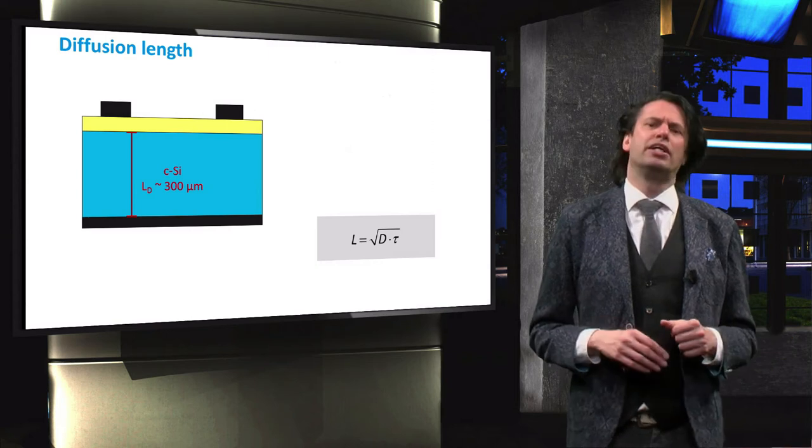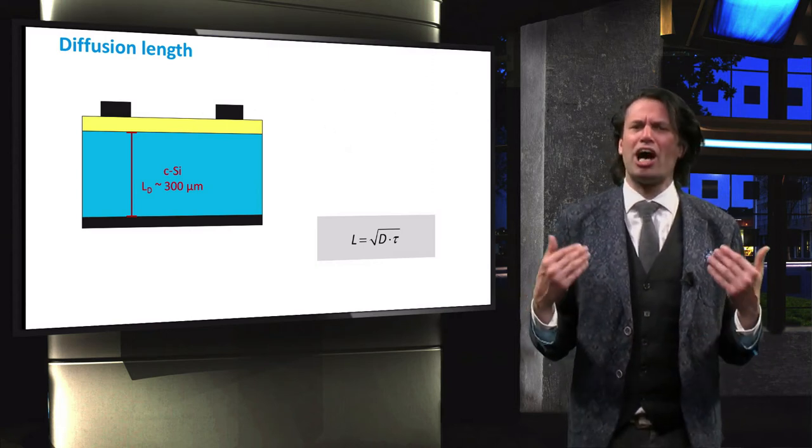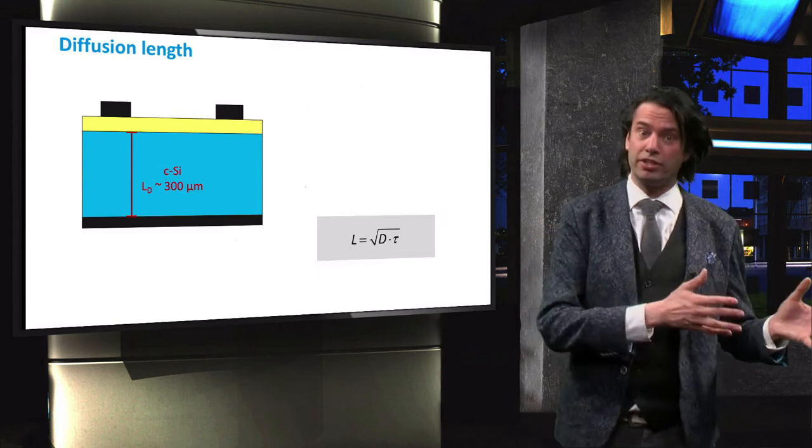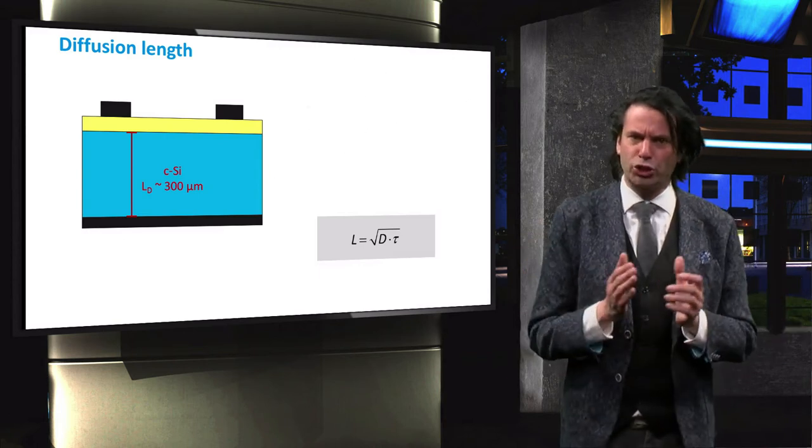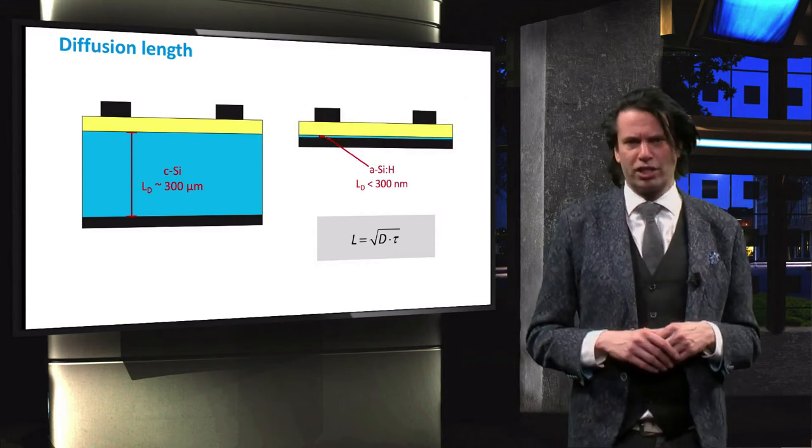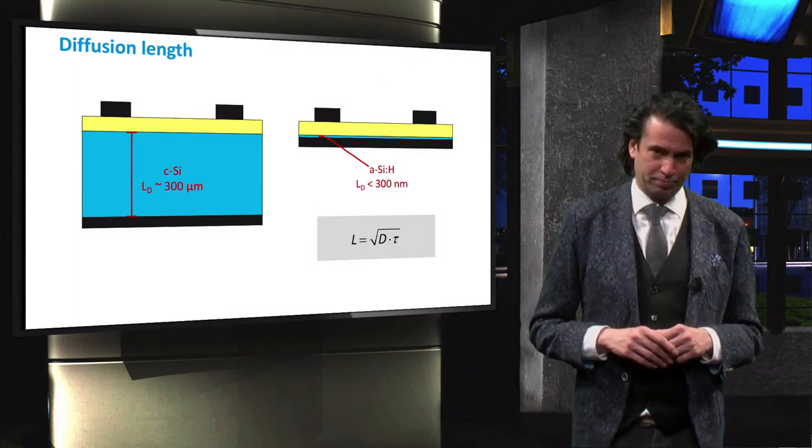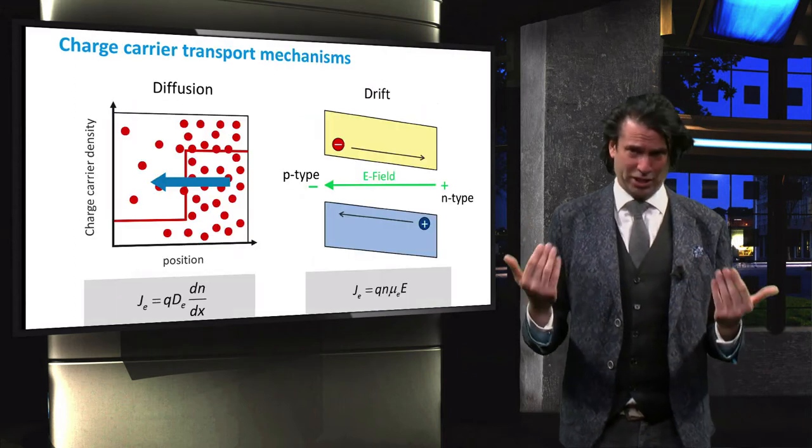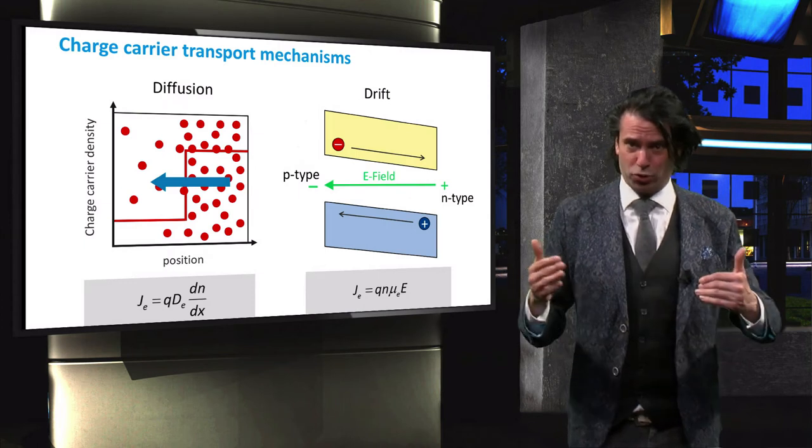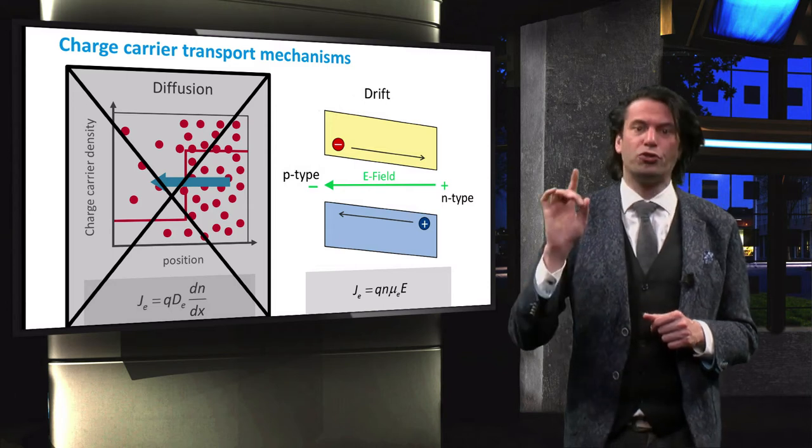As we discussed in the preceding video, amorphous silicon has a much higher defect density than crystalline silicon, and therefore a much shorter diffusion length. The typical diffusion length of amorphous silicon is only 100 nm up to 300 nm. Hence, the transport of charge carriers in a thick absorber cannot rely on diffusion and must rely on drift.